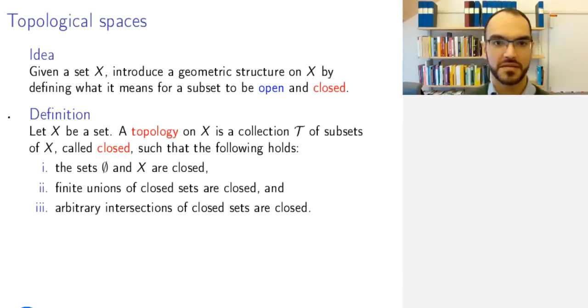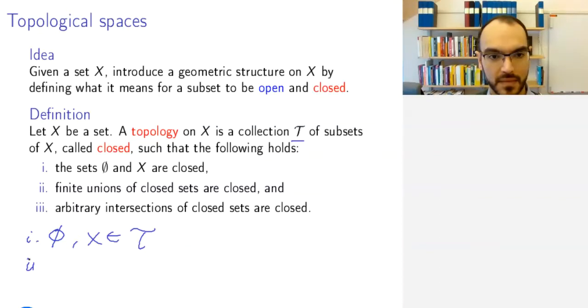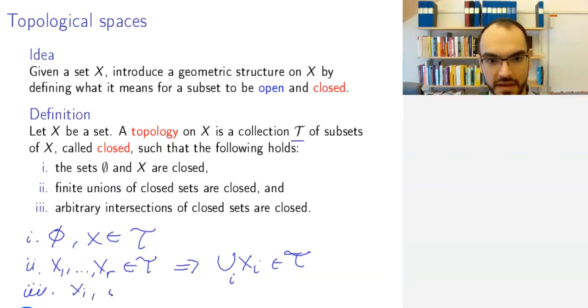You can phrase this more formally by saying that the empty set and X should belong to this T. Two, if subsets X₁ to Xᵣ belong to T, then the union belongs to T.